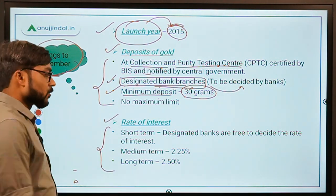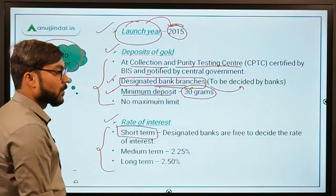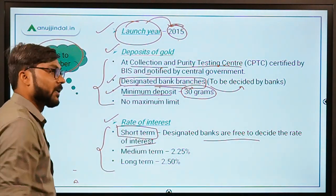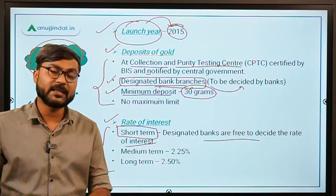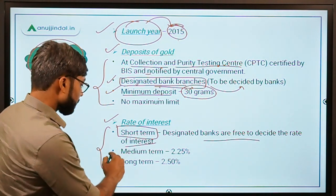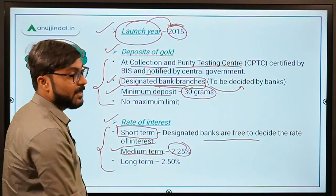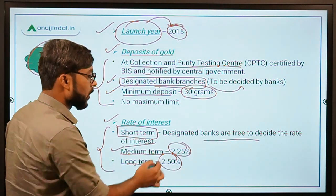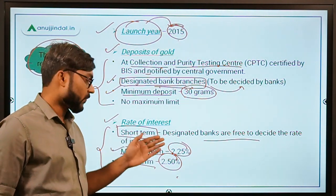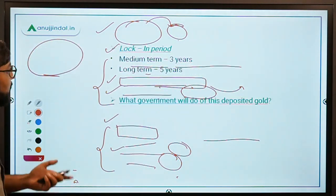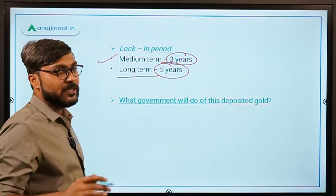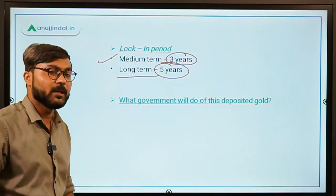Regarding the rate of interest: for the short term deposit, banks are free to decide the rate of interest as per the prevailing market rate. For the medium term, the rate is currently 2.25%, while for the long term it is 2.50% — but these rates keep changing, so check before your exam. The lock-in period for medium term is 3 years, and for long term it is 5 years, while there is no lock-in period for short term.